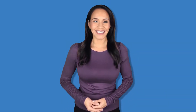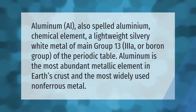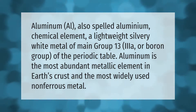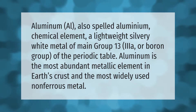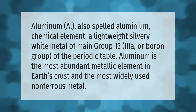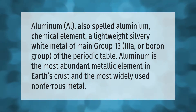Aluminum (Al), also spelled aluminium, is a chemical element — a lightweight silvery white metal of main group 13, or boron group, of the periodic table. Aluminum is the most abundant metallic element in Earth's crust and the most widely used non-ferrous metal.